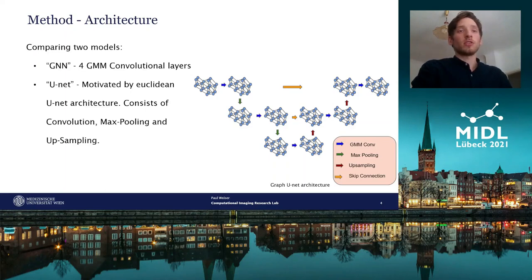Due to the fact that the vertices in the graph have coordinates, max pooling can be defined in a classical manner. Therefore, windows are defined in which the maximum is computed. The window size of the max pooling has a length of four nodes per ring and a width of two rings.